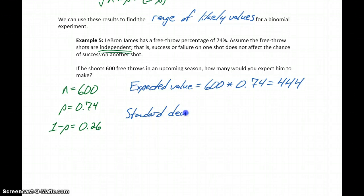We can also calculate the standard deviation for this binomial trial as the square root of 600 times 0.74 times his probability of failure, which is 0.26. We get about 10.7443.